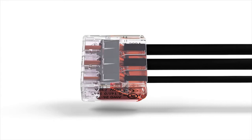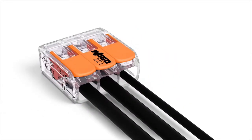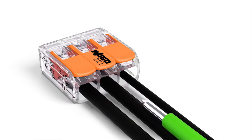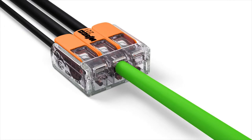A gas-tight contact point provides a durable and secure connection between the conductor and the current bar. Furthermore, two easily accessible test ports, one in the conductor entry direction and one opposite of this, simplify testing, even when installed.